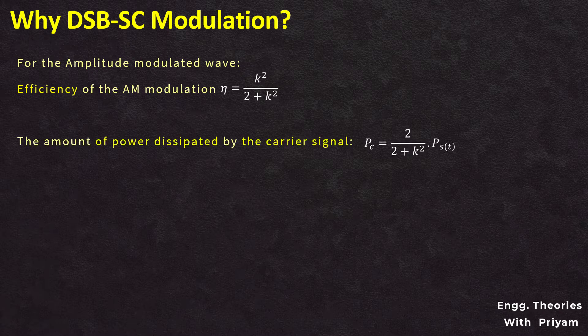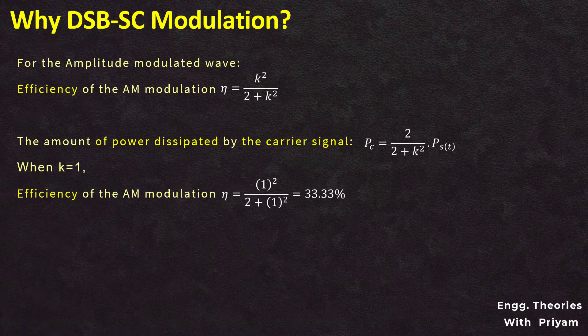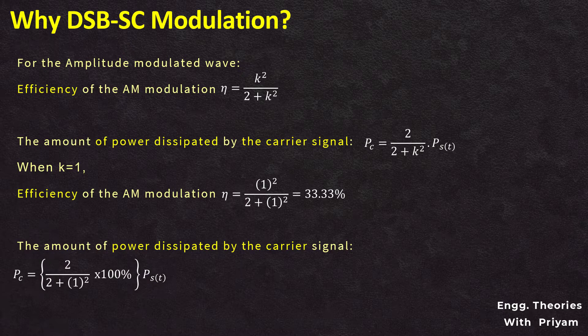The amount of power dissipated by the carrier signal PC is equal to 2/(2 + k²) multiplied by the total power of the amplitude modulated signal. When the modulation index k equals 1, the efficiency of the amplitude modulated signal can be calculated as 33%.